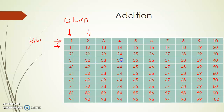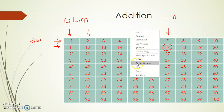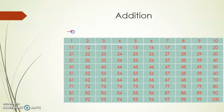Likewise, you can consider any element in this 1 to 100 number chart. For example, 5 plus 10 is 15, 15 plus 10 is 25, 25 plus 10 is 35. If we move to another number, say 17, adding 10 gives 27, and adding 10 more gives 37. So when we move down the column, the next number is obtained by adding 10.